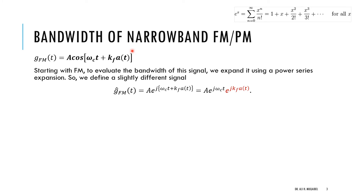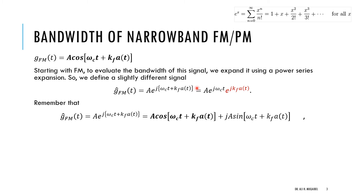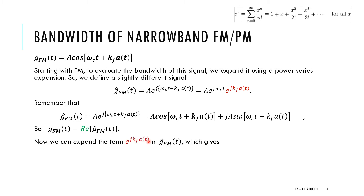Our target is to rewrite this in a way that reveals the bandwidth. We can always go back from the exponential to the real signal by taking the real part, since the complex exponential can be written as cosine of the angle plus j times sine of the angle. We'll work with the complex exponential form, knowing that only the real part will be retained for the FM signal.